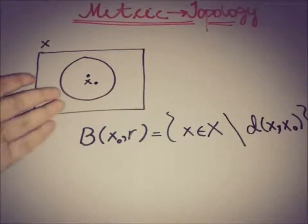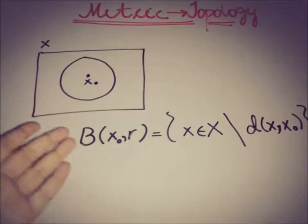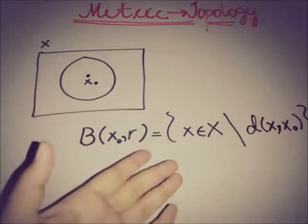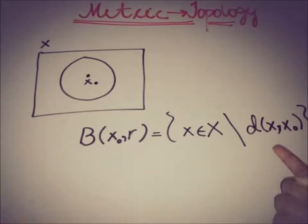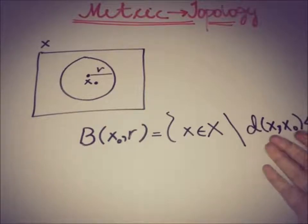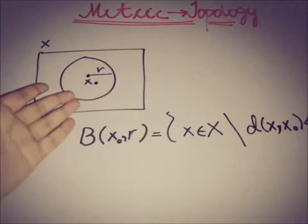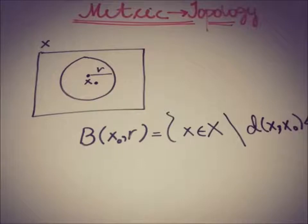Recalling the definition of an open ball: if we take any random point x₀ in a metric space and form a ball of radius r, then an open ball is a ball that contains elements of the metric space whose distance from the center x₀ is strictly smaller than r. This is the definition of an open ball, where D is the metric. Now if we form a collection of all possible open balls in a metric space X...